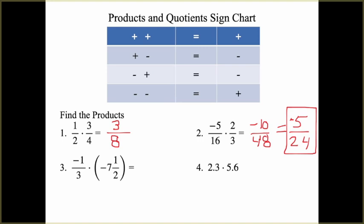For number 3, we have a fraction multiplied by a mixed number. When you do this, you must turn the mixed number into an improper fraction. Negative 7 and 1 half: multiply negative 7 times 2 to get negative 14, then add 1 to get negative 15 over 2. So now we have negative 1 and 1 third times negative 15 halves. Negative times negative gives a positive answer of 15 over 6. We simplify — both are divisible by 3 — and we get 5 halves.